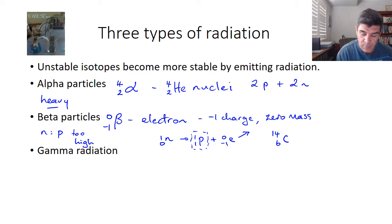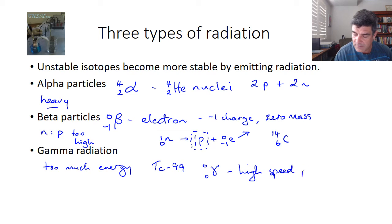The third type is basically just a result of a nucleus having too much energy. An example of that would be technetium-99. This is the release of a gamma particle. This is a photon radiation with no mass and no charge. This is a high-speed photon, and it's released in order to try and reduce the amount of energy in the nucleus.